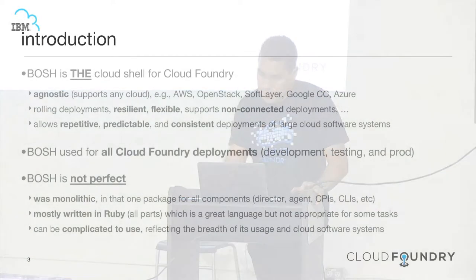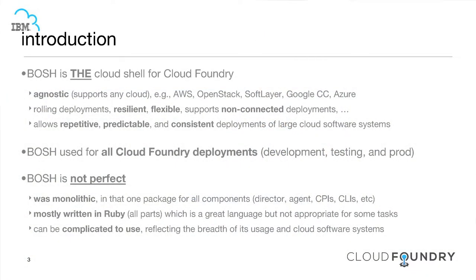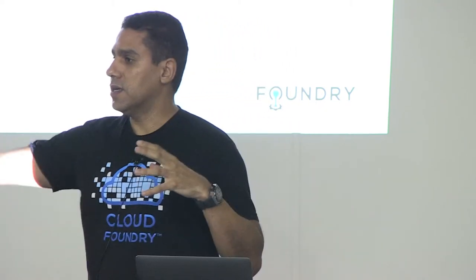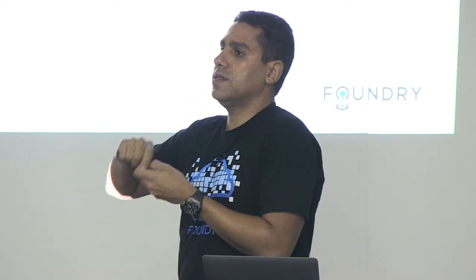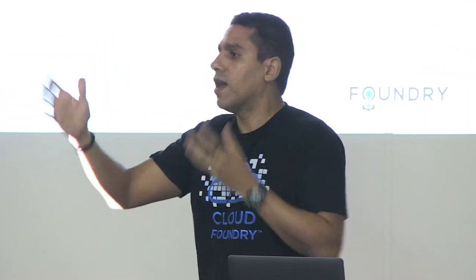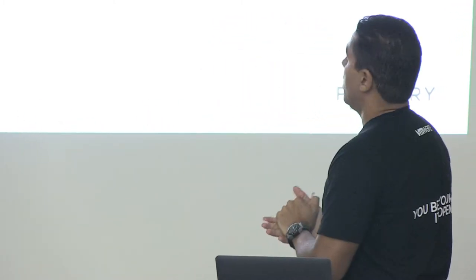Bosch is essentially the shell for the cloud — the cloud shell for Cloud Foundry. When you're using your Linux or Mac system you bring up a shell like iTerm and can issue commands; think of Bosch as exactly the same thing except it operates on the cloud you're targeting. If you're targeting AWS, Bosch lets you issue commands on AWS. How does it know about AWS, SoftLayer, OpenStack? Because you build a CPI.